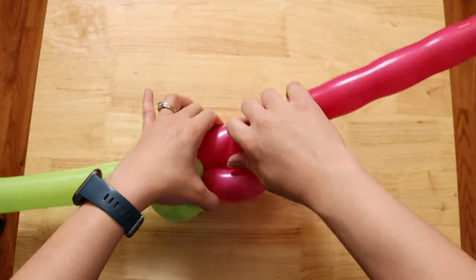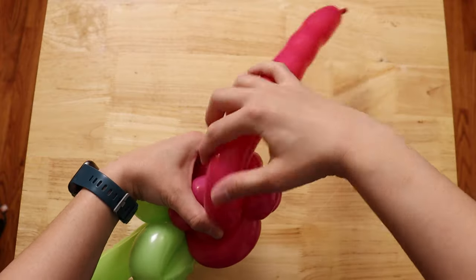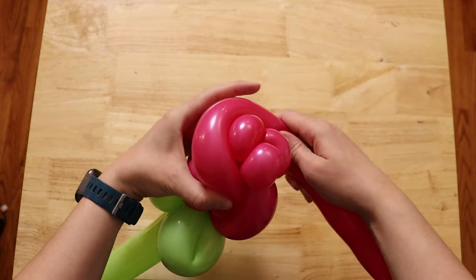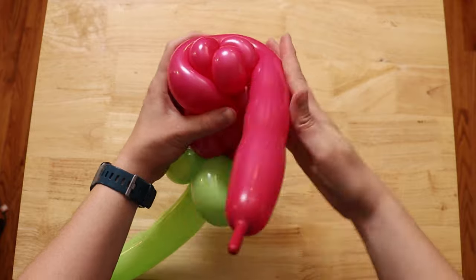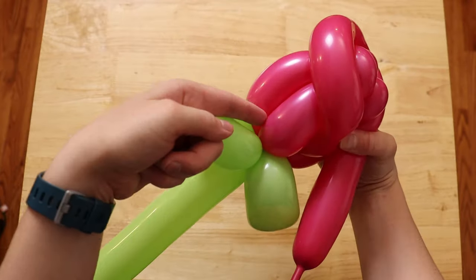Then I'm going to hold that spot with my thumb and take the remainder of the balloon and pull it nice and taut around those three central pinch twists going all the way around and coming back down so that the end of the balloon overlaps the spot where we first came up.